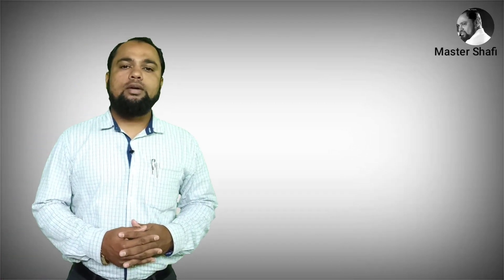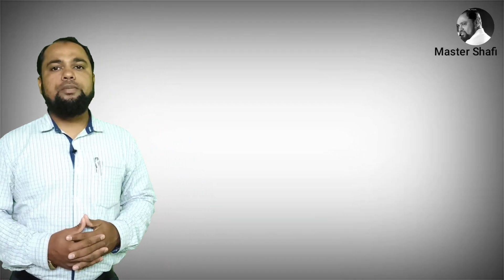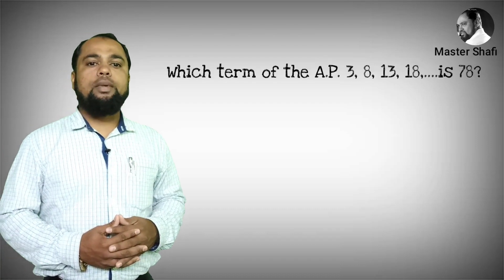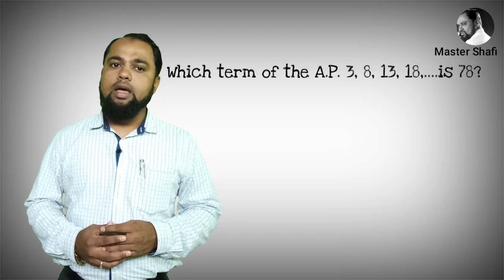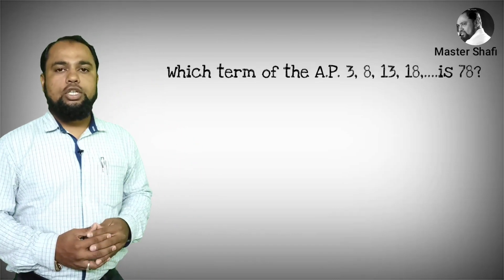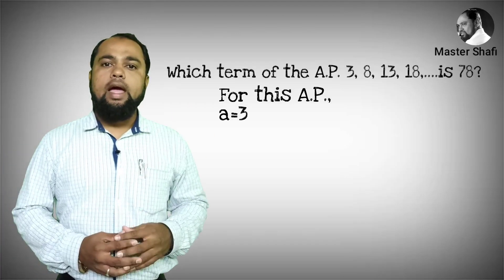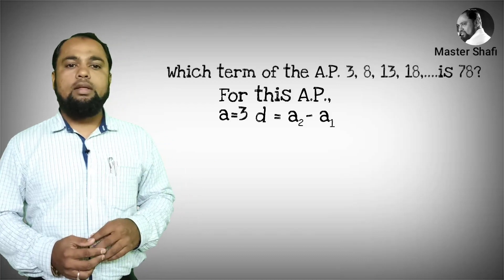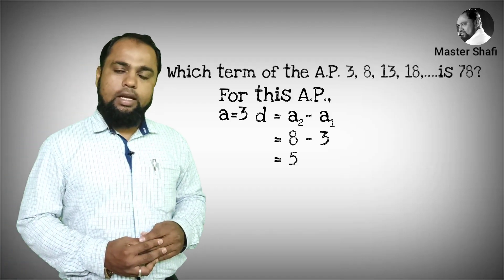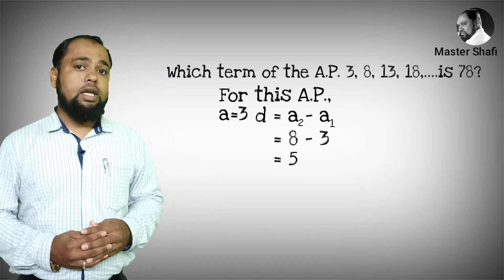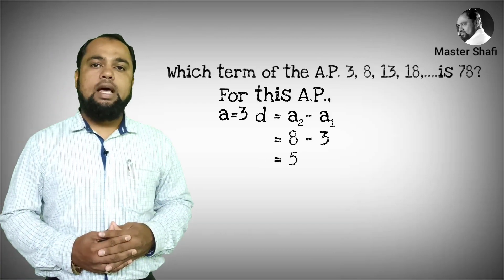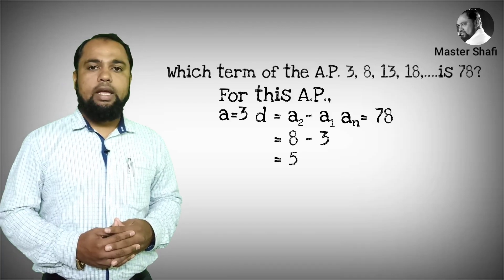We are going to solve a problem on arithmetic progression. The problem is: which term of the AP 3, 8, 13, 18 is 78? In this arithmetic progression, the value of a is 3, and the value of d is a2 minus a1, which is 8 minus 3, equal to 5. The value of a_n, the last term, is 78.